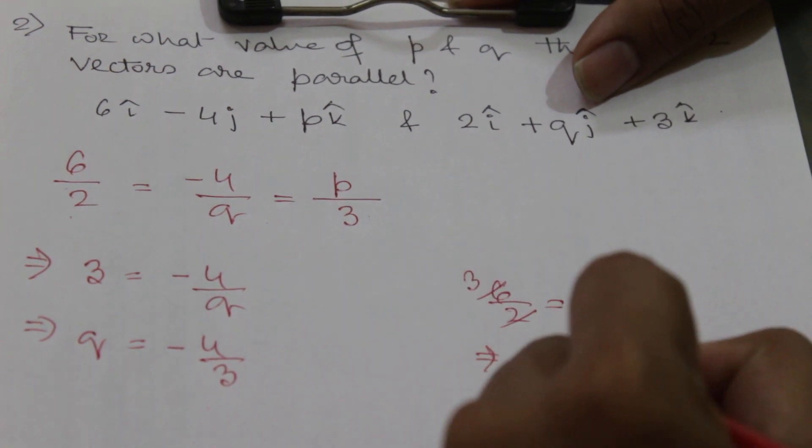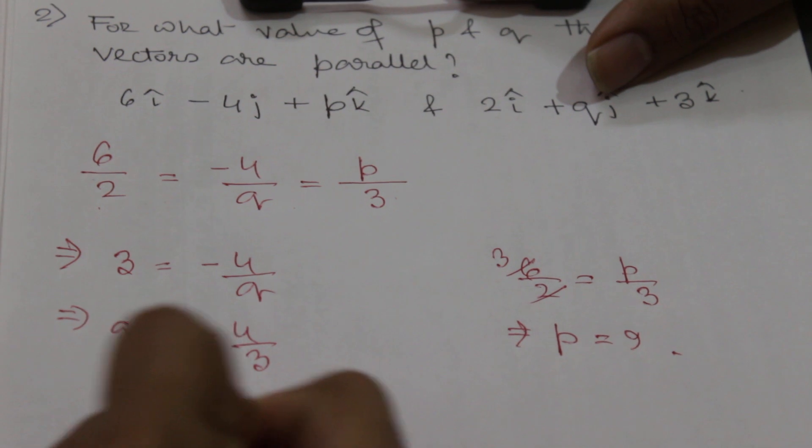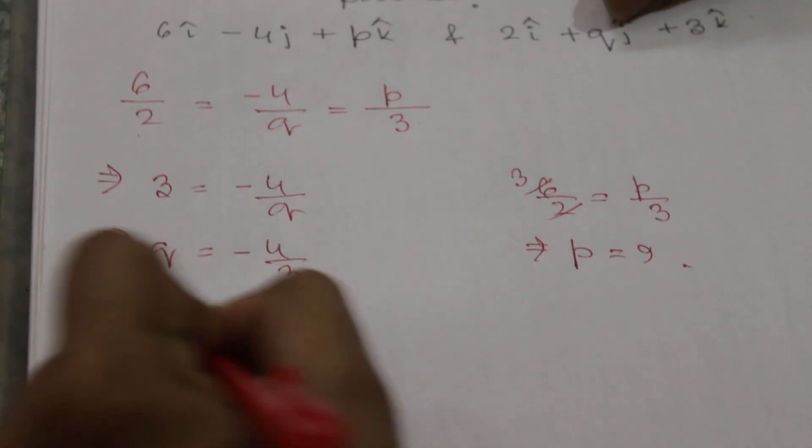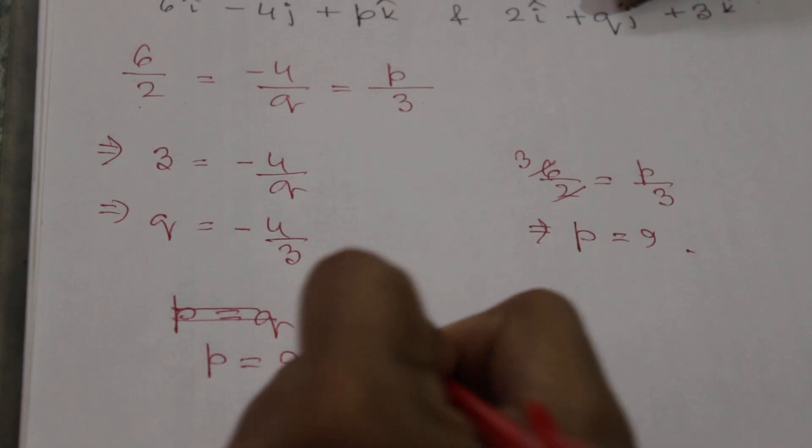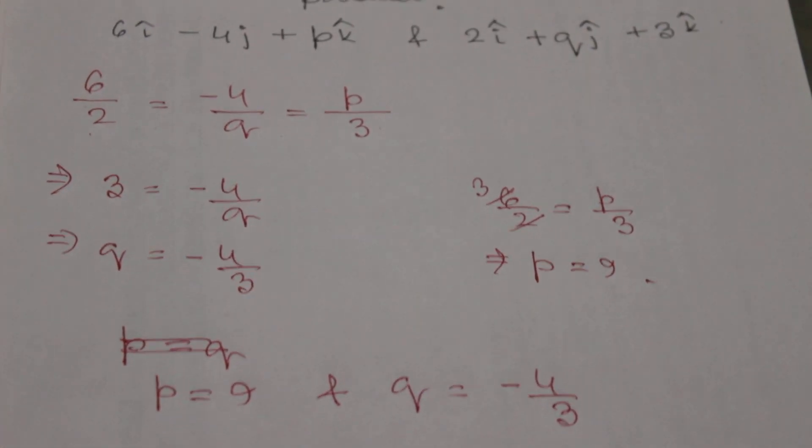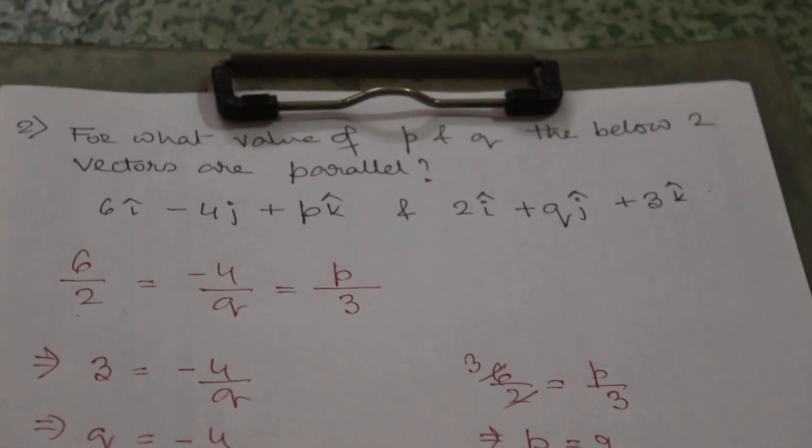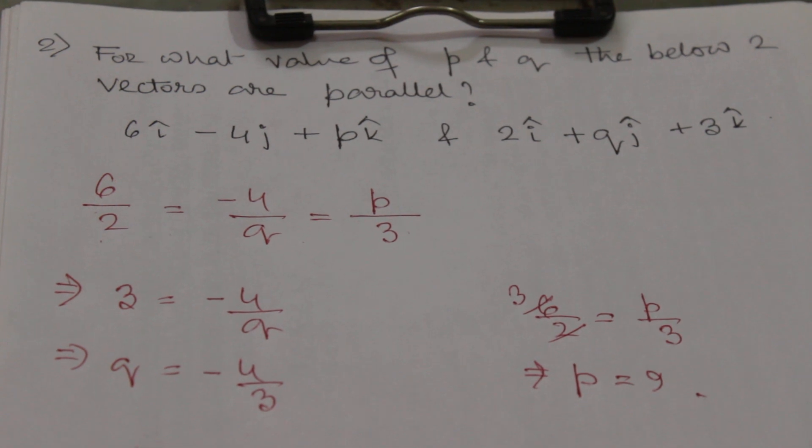9. So the final answer is p equals 9 and q equals minus 4 by 3. Understood? That's it.